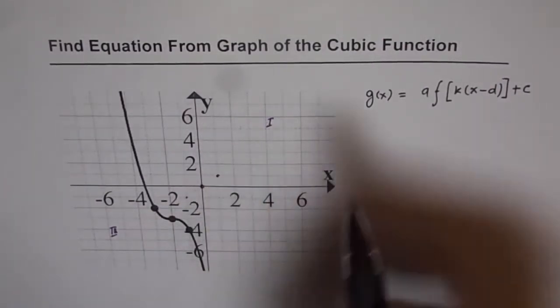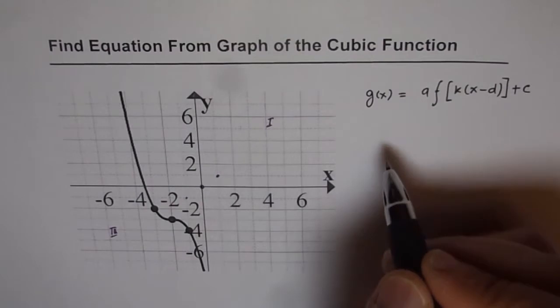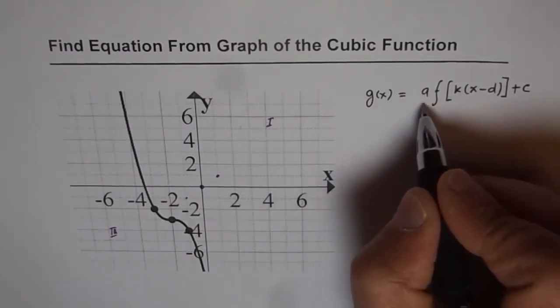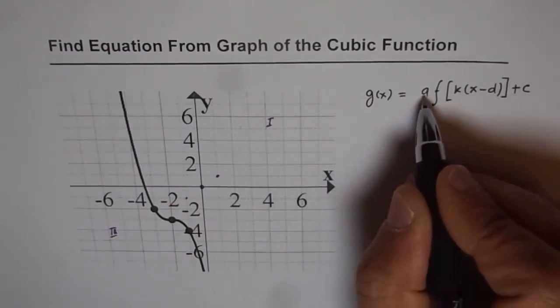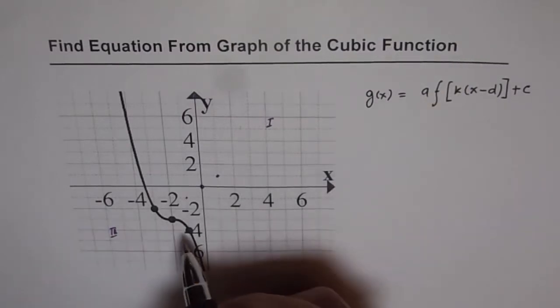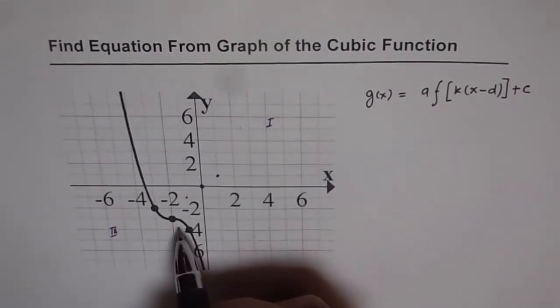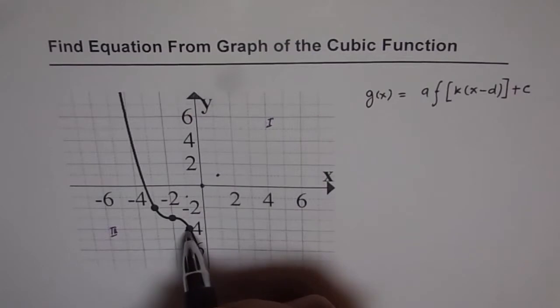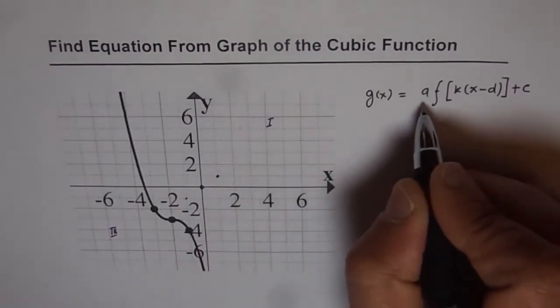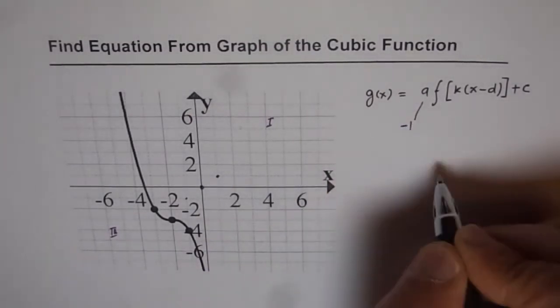So you could call it a reflection here on the vertical side. So we have minus here. So a value is definitely minus and minus by how much? So vertical stretch, the next point is one unit away. So vertical stretch is of one only. So therefore a is minus one for us.